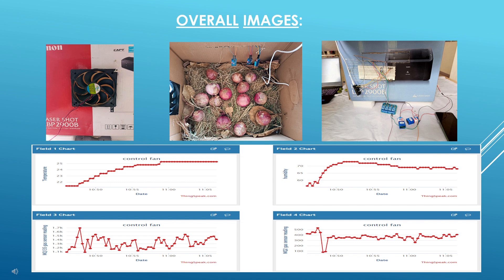The bottom row consists of four data charts from ThingSpeak, displaying temperature, humidity, and gas sensor readings over time, labeled as control fan. The experiment appears to focus on regulating storage conditions using a fan and sensors to track environmental changes.